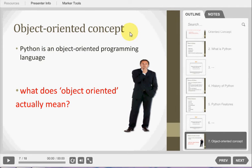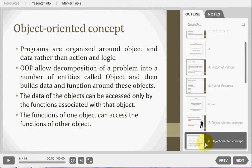The next question is object-oriented concept. Python is an object-oriented programming language. But a question is that what do you mean by object-oriented? Object-oriented programming is a programming model where programs are organized around an object and data rather than action and logic. Object-oriented allows decomposition of problem into the number of entities called as objects, then builds the data and function around these objects.